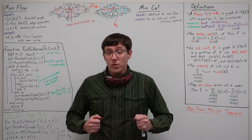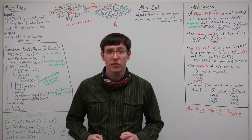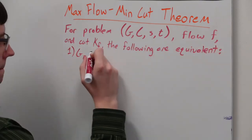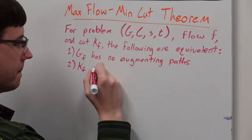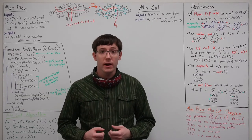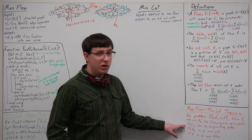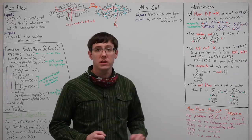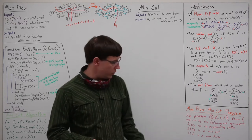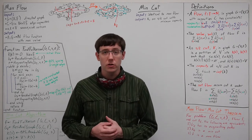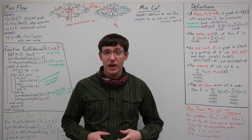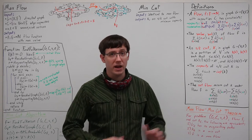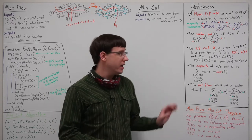Now that we have our algorithms for max flow and min-cut, we want to prove them both correct. The basis for their correctness is the max flow min-cut theorem. The theorem says that if we find a flow f where the residual graph has no augmenting paths, that is equivalent to saying that f is a max flow or that k_f is a min-cut. My goal for the remainder of the video is to prove that condition 1 implies conditions 2 and 3, which is sufficient to show the correctness of our algorithms. Our first step is to define a net flow across a cut.